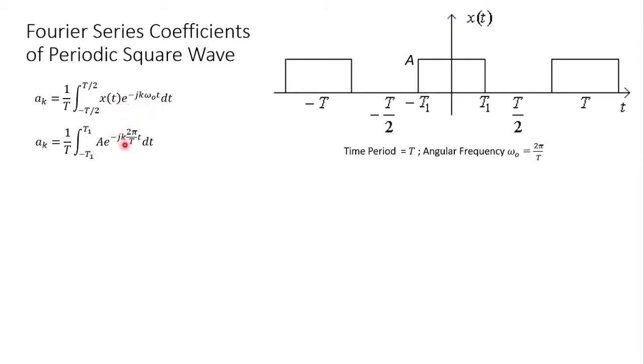In the third equality, we solve the calculus. Whatever is in the argument of this exponential will appear in the denominator, so we have -1 over jk(2π/T) appearing outward, and the same exponential will come here. We are going to set the value of t from -t₁ to t₁.